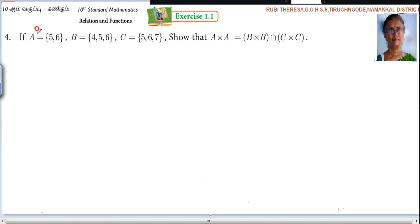Now listen here, if A equals {5,6}, B equals {4,5,6}, C equals {5,6,7}, show that A cross A equals B cross B intersection C cross C. So you have to show that LHS is equal to RHS.